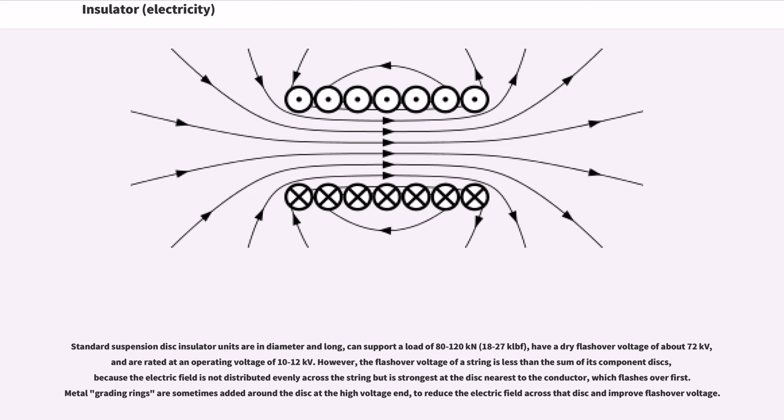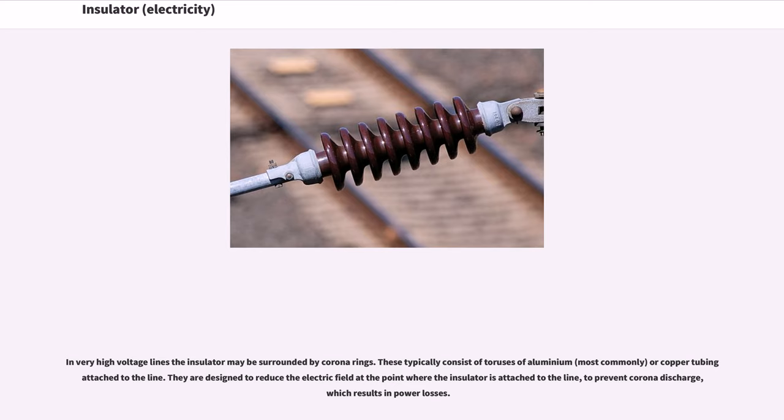Standard suspension disc insulator units are 10 inches in diameter and 5.75 inches long, can support a load of 80-120 kN, have a dry flashover voltage of about 72 kV, and are rated at an operating voltage of 10-12 kV. However, the flashover voltage of a string is less than the sum of its component discs, because the electric field is not distributed evenly across the string but is strongest at the disc nearest to the conductor. Metal grading rings are sometimes added around the disc at the high voltage end to reduce the electric field across that disc and improve flashover voltage. In very high voltage lines, the insulator may be surrounded by corona rings designed to reduce the electric field at the point where the insulator is attached to the line, to prevent corona discharge, which results in power losses.